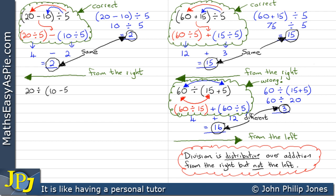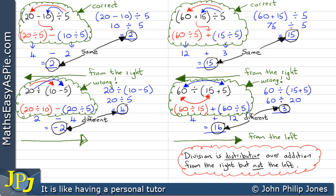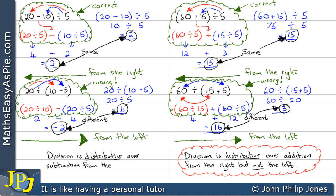Let's have a look at another example: 20 is going to be divided by the difference between 10 and 5. If I work that out in blue we get the answer of 4. Now if I say the 20 is divided by the 10, and then the 20 is divided by the 5, and subtract — we consequently end up with minus 2. So we can see that these two are in fact different. Something's gone wrong here, and this is wrong. We've done this from the left. So division is distributive over subtraction from the right, but not from the left.